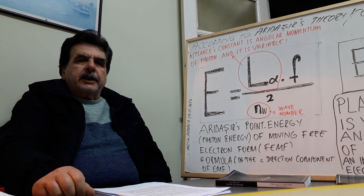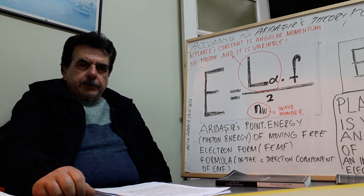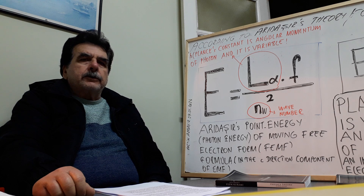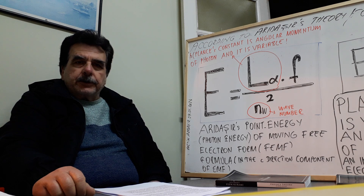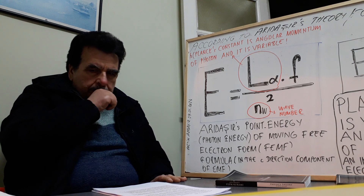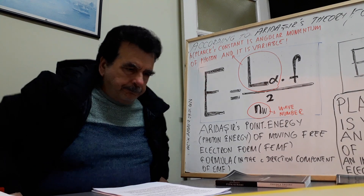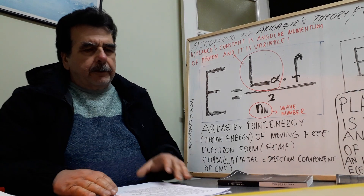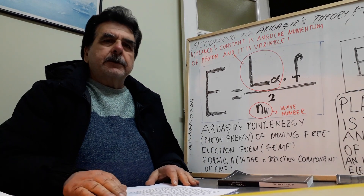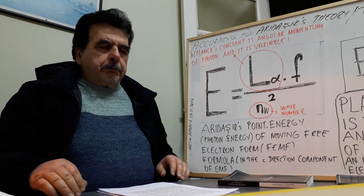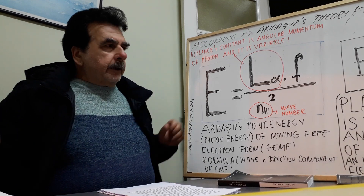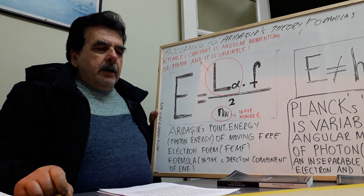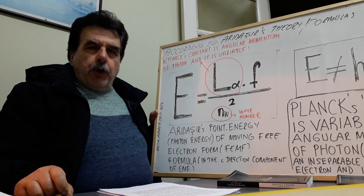Hello, my name is Metin Arudashir. This is the 283rd part of the explanation of my theory. According to my theory and my formulas, Planck's formula is wrong.